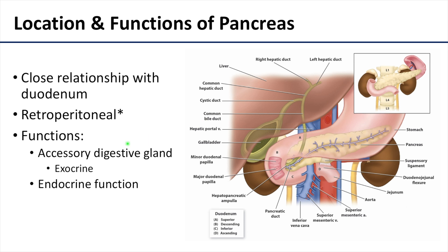The pancreas is an accessory digestive gland. Thinking about its exocrine function, it produces pancreatic enzymes, but it also has a very important endocrine function in terms of the secretion of insulin.